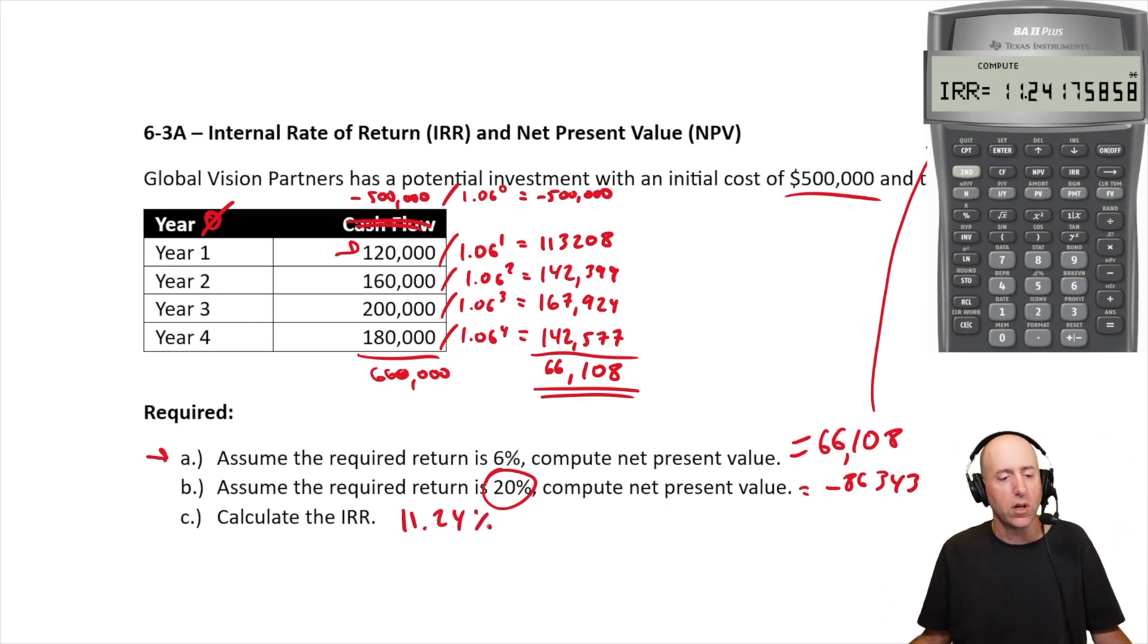And there we have it. We've solved the problem. Now, if I entered this IRR as my discount rate, 11.2418, 11.2418. If I go into NPV and I say, no, my I is 11.2418, enter,